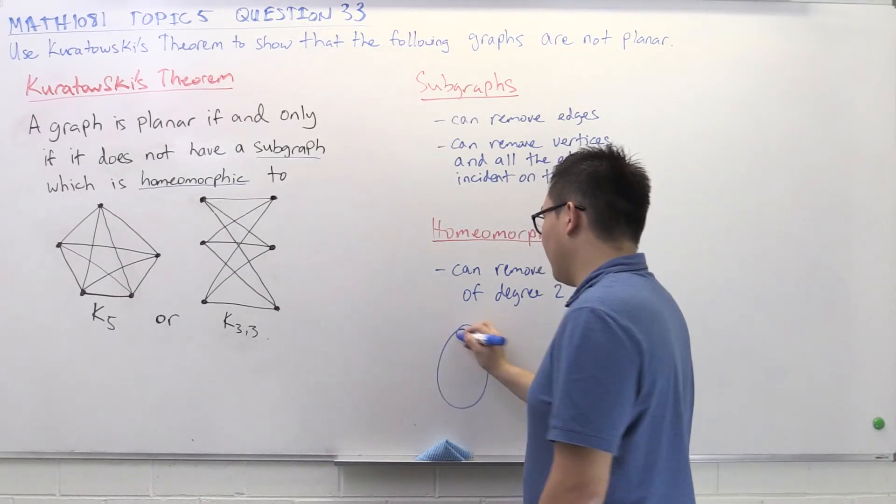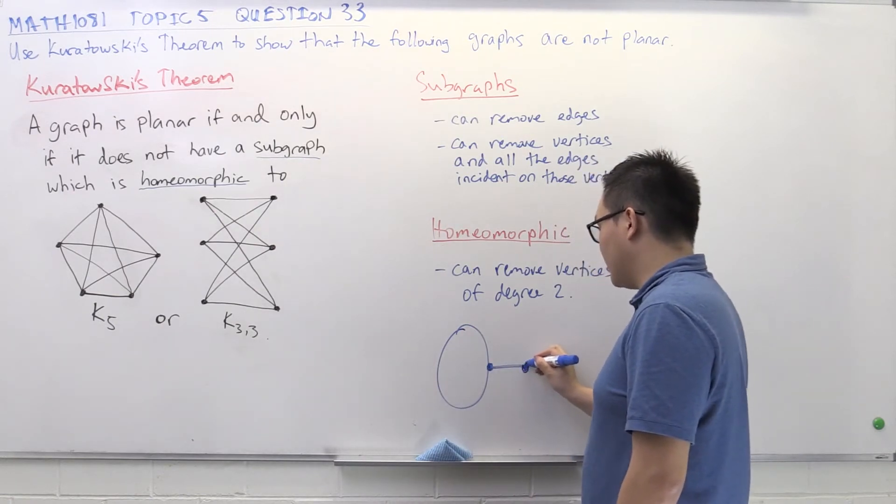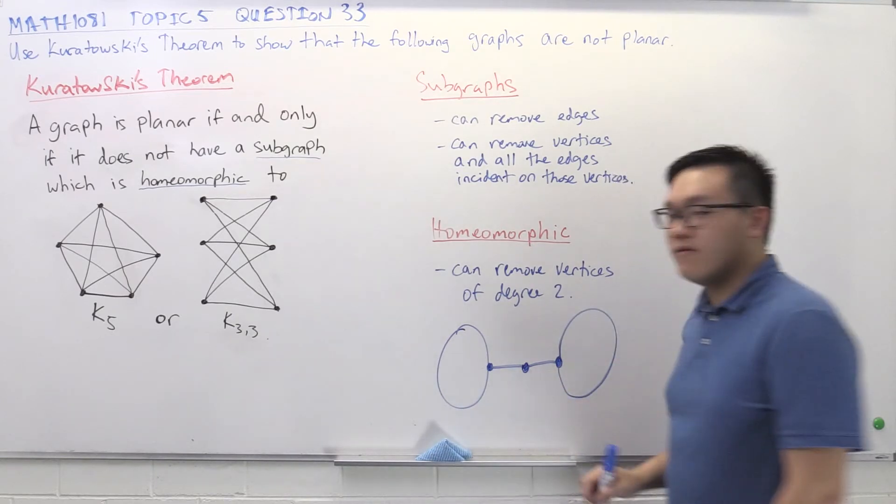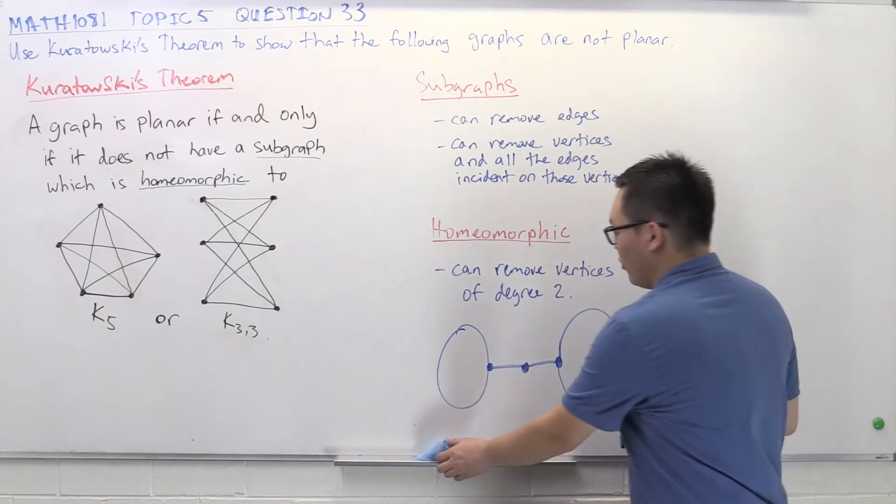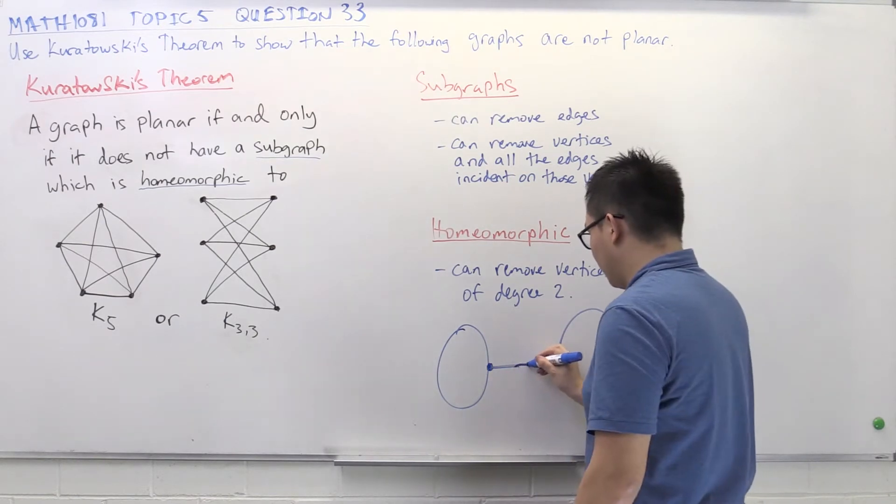You may recall that the process of adding a vertex of degree 2 is called elementary subdivision. For example, if I've got a graph where I've got some stuff here, and I've got a vertex here, an edge, a vertex, an edge, a vertex, and some more stuff. Well, that's a vertex of degree 2, so I can remove that. Just remove that vertex and draw it up below.